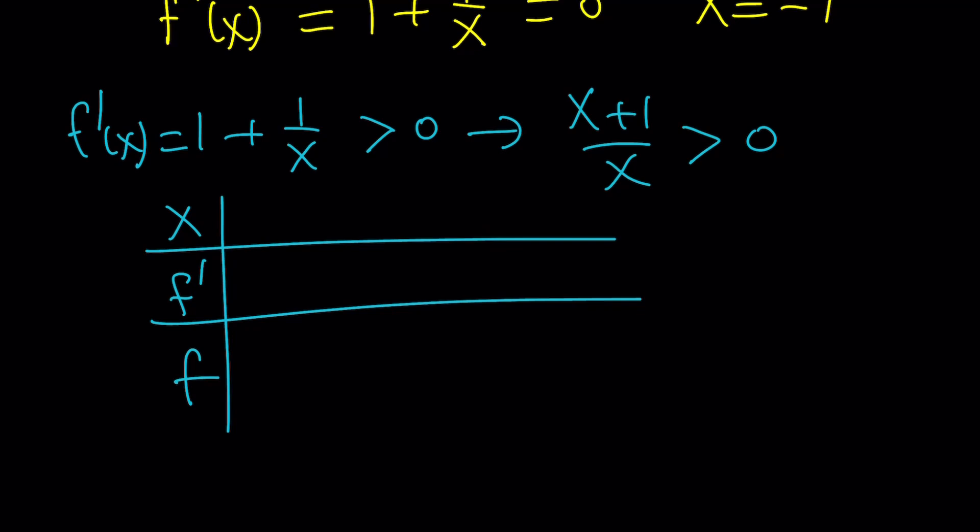From here we're going to get x plus one divided by x is greater than zero so we should have zero on one side and then we'll make a table. We're going to have a row for x, f prime, and f. The critical points are negative one and zero, and then we'll put zeros. For x values greater than zero both of these are positive, then you have a minus sign, then a plus sign which indicates that our function increases then decreases then increases.